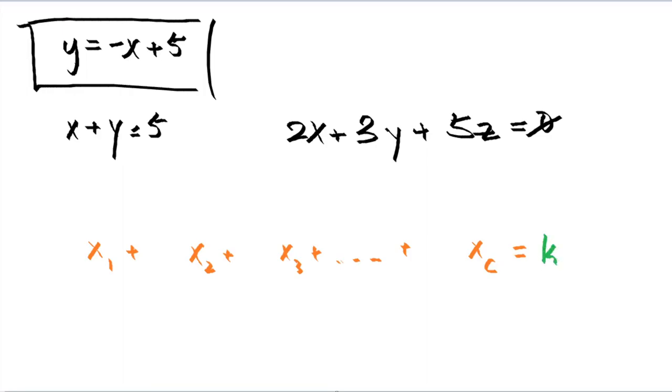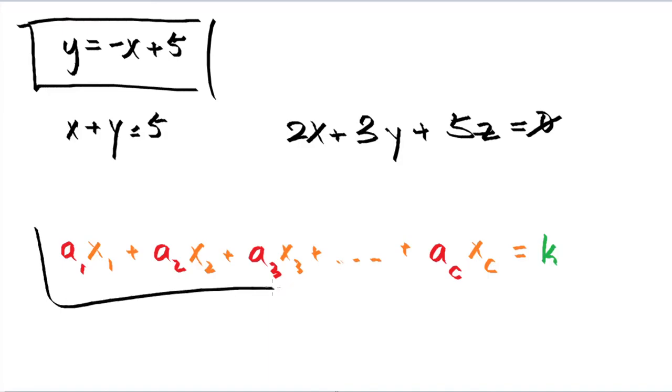And then, of course, your third and other component to a linear equation is some sort of coefficient. We'll just call that a1, a2, a3, plus so on and so forth until you get to ac. And this is your generic format for a linear equation right here.